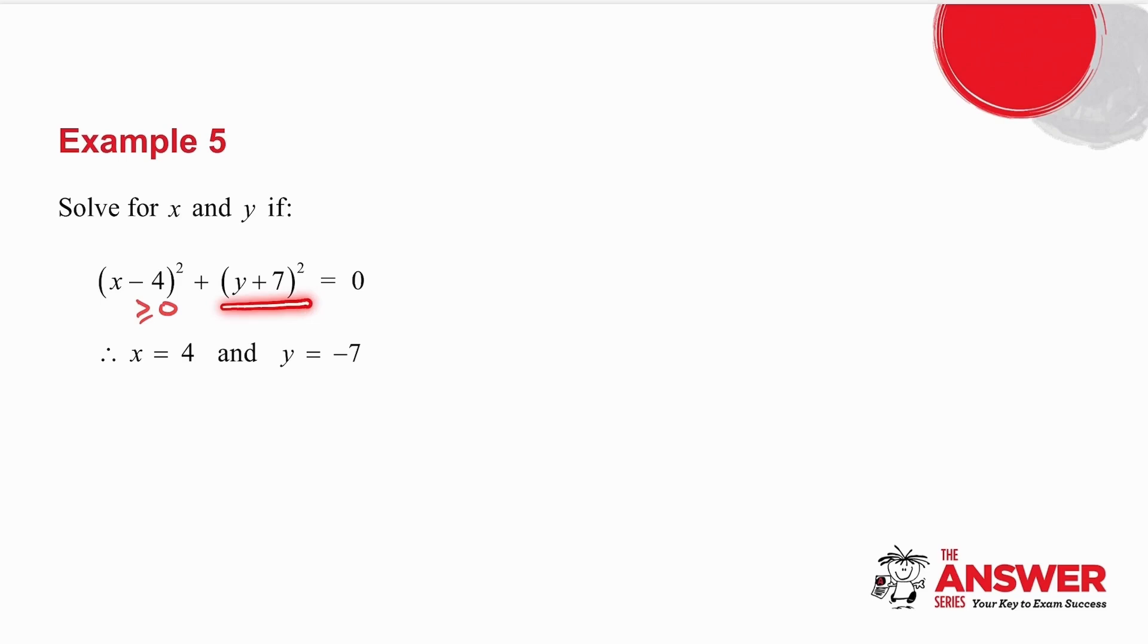The second bracket is also squared. What do you know about it? It's also greater than or equal to 0. Now, how can I add two things to get an answer of 0? Well,